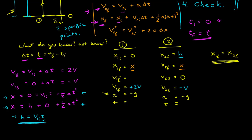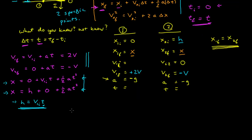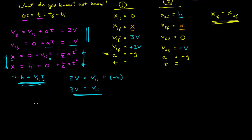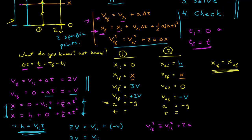Combining the velocity equations for particles 1 and 2: 2v equals v sub 1i plus a times t. Substituting from the particle 2 equation where a times t equals negative v, this gives 2v equals v sub 1i minus v, so the initial velocity of particle 1 is 3v. Now let's bring in the third constant acceleration expression: the final velocity squared equals the initial velocity squared plus 2 times acceleration times displacement. For particle 1: (2v)² equals (3v)² plus 2 times a times x.